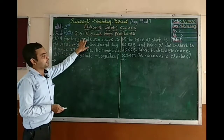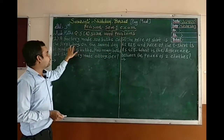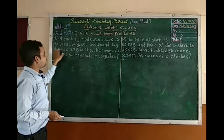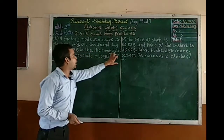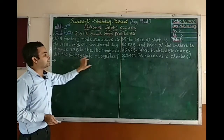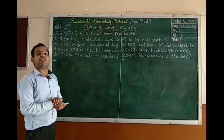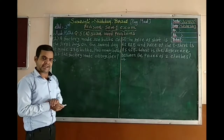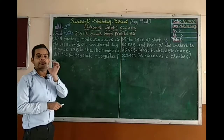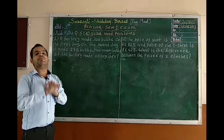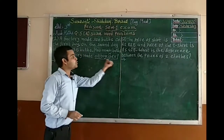A factory made 320 bulbs on the first day, and on the second day it made 235 bulbs. So how many bulbs did the factory make altogether? We need to find the total number of bulbs. The keyword for this word problem is 'all together.'